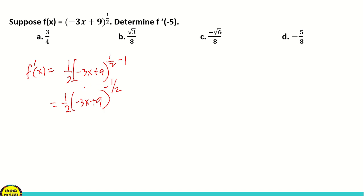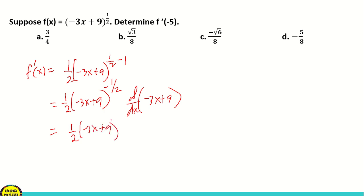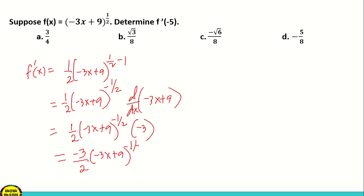Using the chain rule, we multiply by the derivative of the inside, which is negative 3x plus 9. The derivative of negative 3x plus 9 is negative 3. So we have 1 half times negative 3x plus 9 raised to negative 1 half times negative 3. Multiplying 1 half times negative 3 gives negative 3 over 2. So f prime of x equals negative 3 over 2 times negative 3x plus 9 raised to negative 1 half.